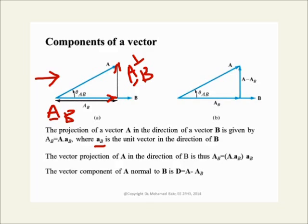If you want to get the actual vector projection, you take this scalar length — A subscript B — and multiply it by the unit vector in the direction of B. If you want to get the normal component, I prefer to call it A subscript B normal — the component of A normal to B. We have seen examples of this in previous problems, and we'll show one more example right now.